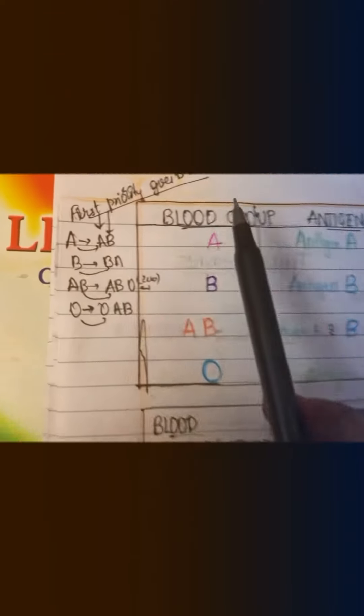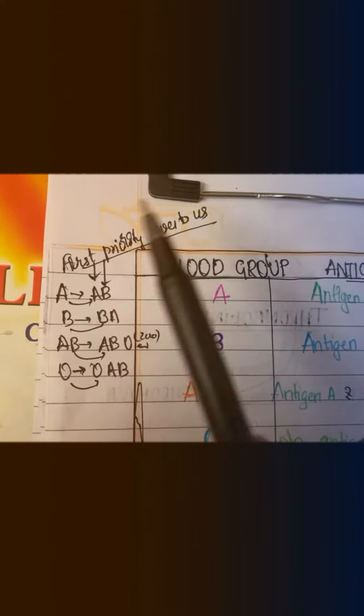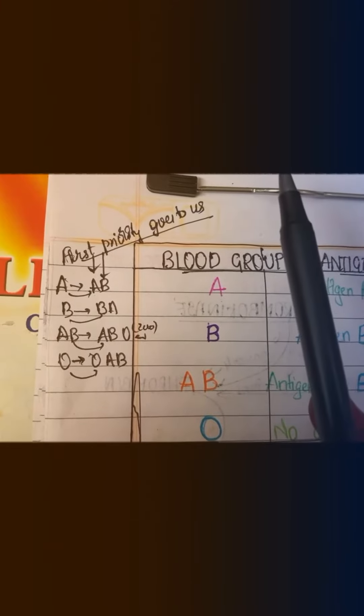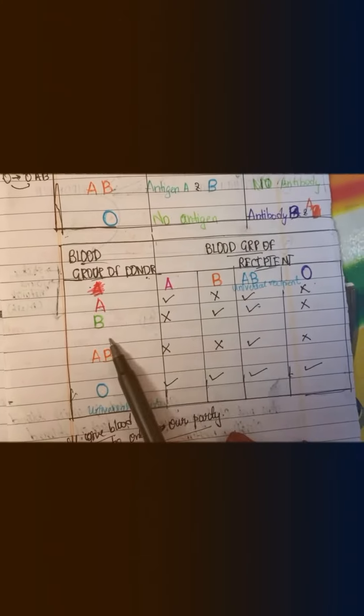This is how you can easily remember which blood group has which antigen and which antibody. Now coming to blood group of donor and recipient — who should give to whom. They are also selfish; they think they will give to themselves only.